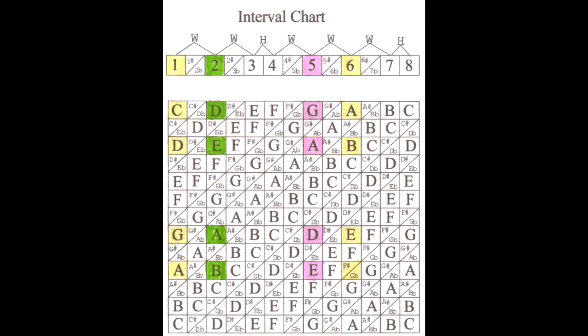In the key of A, those chords would be A, B minor, E, and F sharp minor.